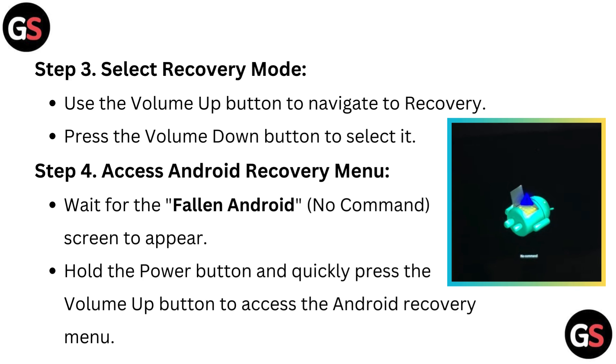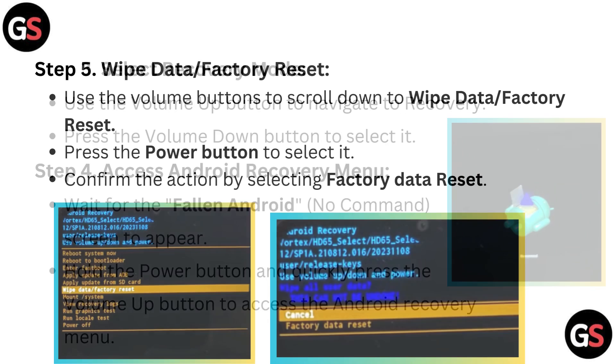Step 4: Access the Android recovery menu. Wait for the fallen Android no command screen to appear. Hold the power button and quickly press the volume up button to access the Android recovery menu.